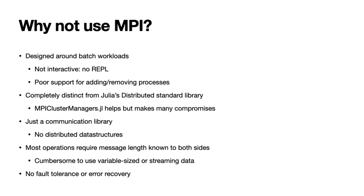So why might you not want to use MPI? It's very much designed around batch workloads — there's no interactivity and you don't get a REPL session. It's very difficult to add or remove processes during your computation. It's completely distinct from Julia's distributed standard library; there is the MPI ClusterManagers package which tries to bridge this, but it has to make a lot of compromises. It really is just a communication library — there are no distributed data structures or facilities for locking resources. Most operations require the message lengths to be known on both sides, which makes it difficult to use with variable-sized or streaming data. And finally, there's no fault tolerance or error recovery, so if something goes wrong you just have to start again from scratch.